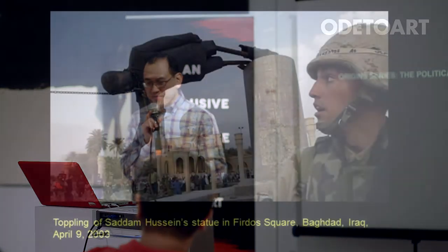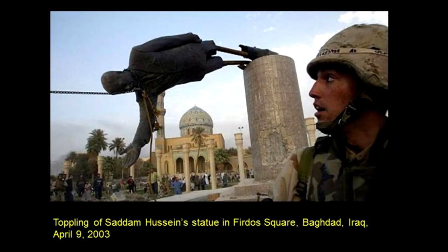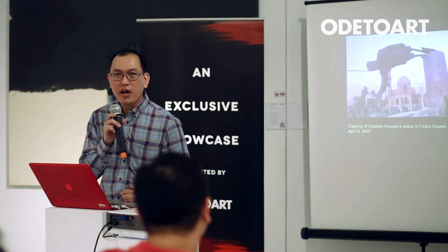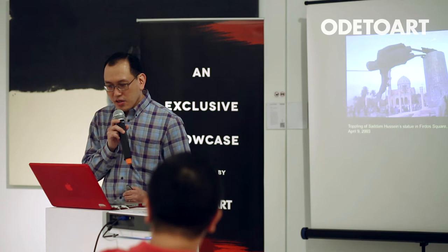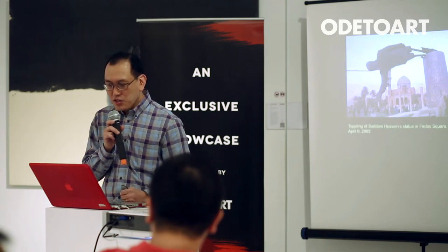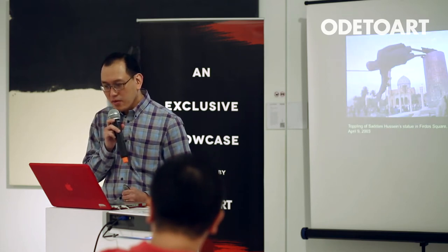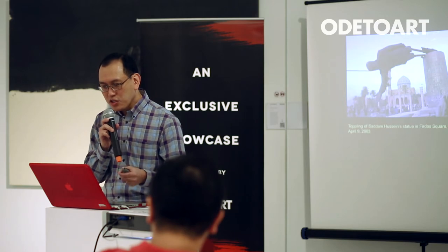I'm going to start by showing you this picture. Have you all seen this picture before? This is the photo of the toppling of Saddam Hussein's statue, when the Americans invaded Iraq. This took place on April the 9th, 2003. I find this image interesting because it's really an image reading an image — there are layers of propaganda here.